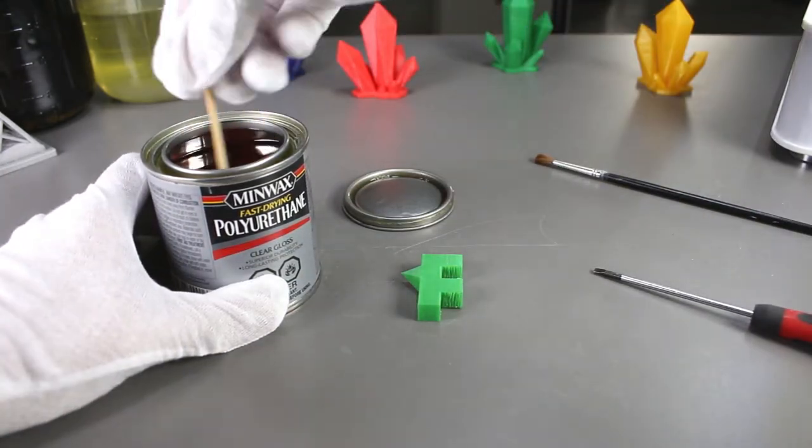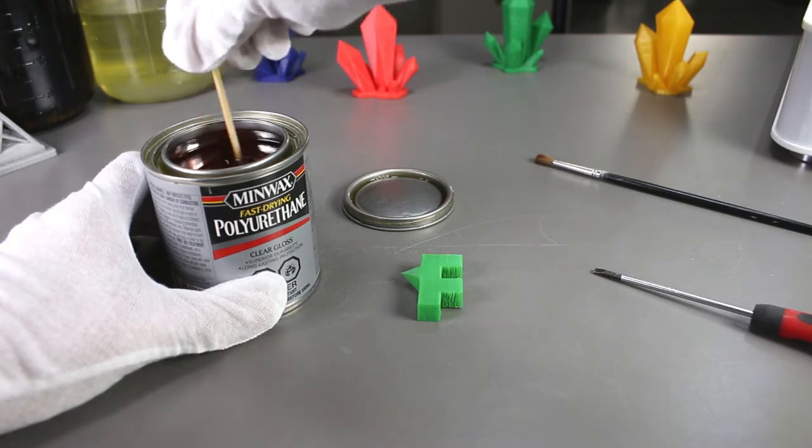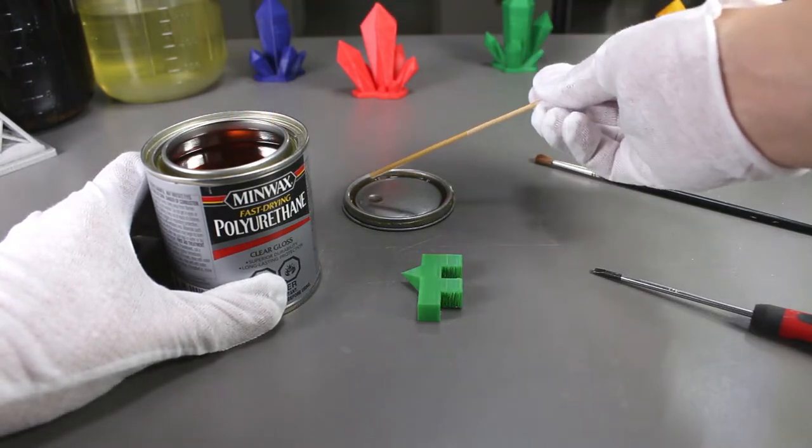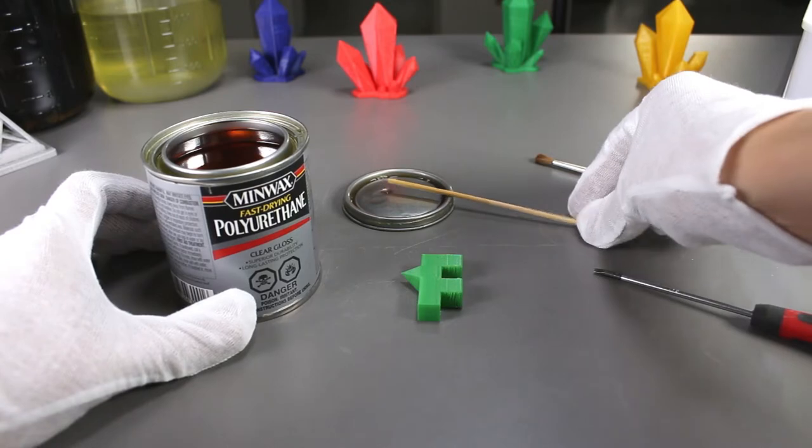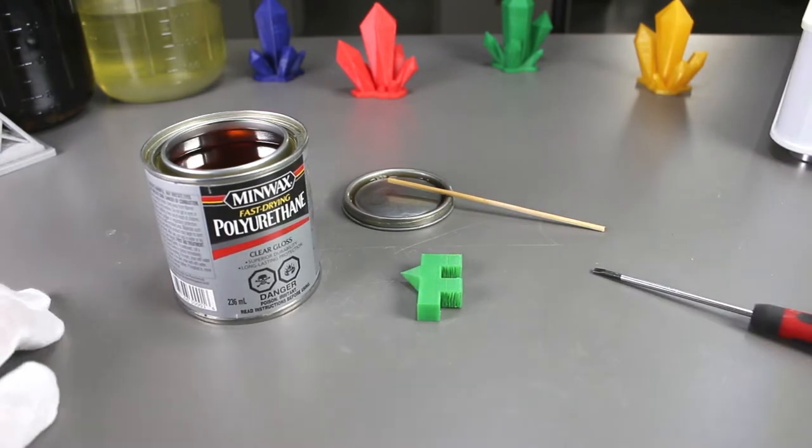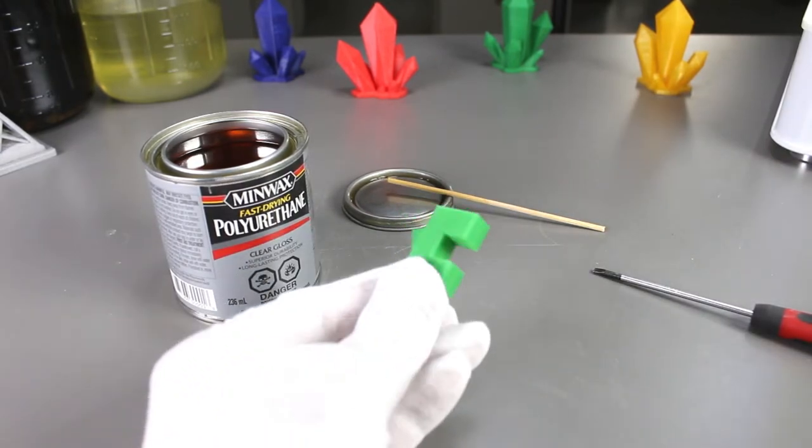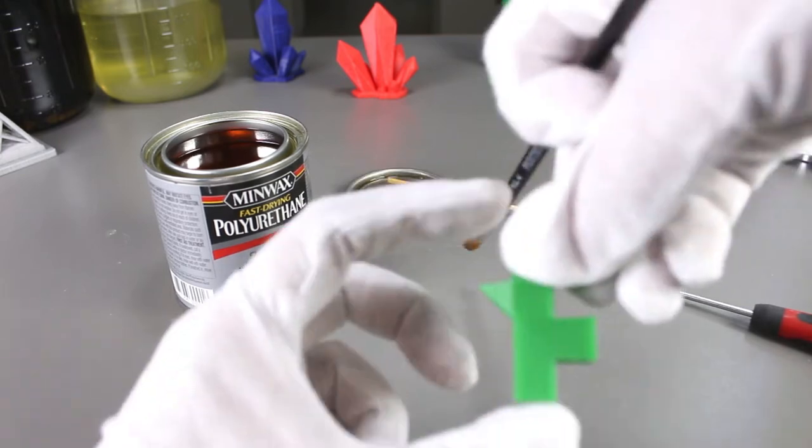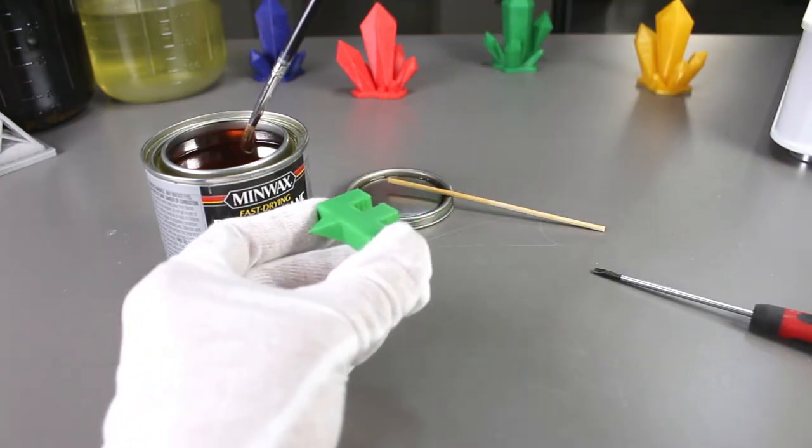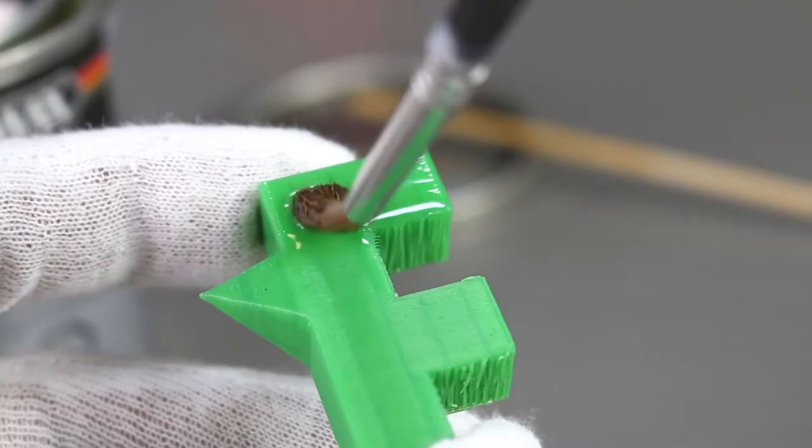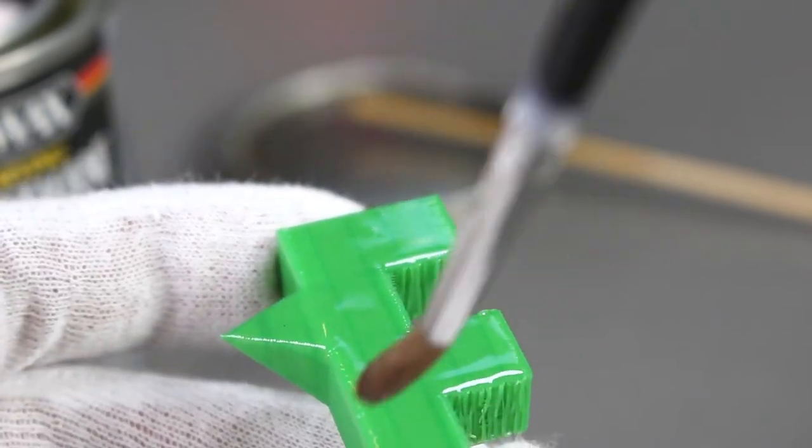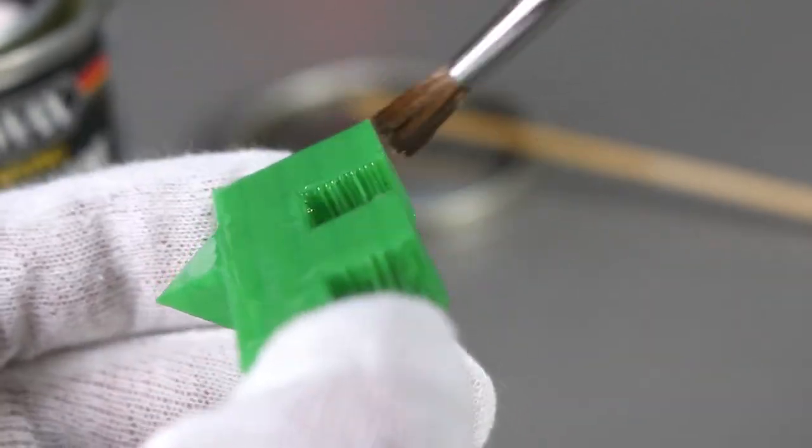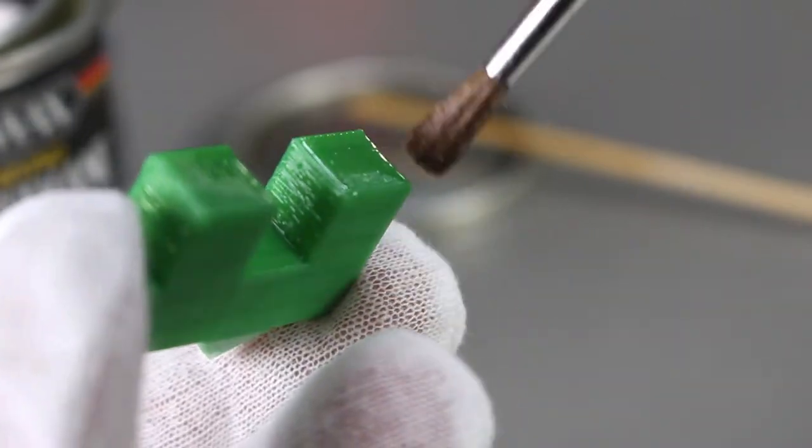The instructions say to stir it first and then we'll use a very fine paintbrush to brush it onto the surface. I'll keep it to this face of the print so we can see the difference between the two faces afterwards.